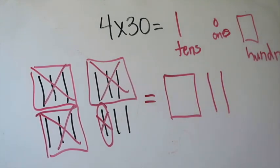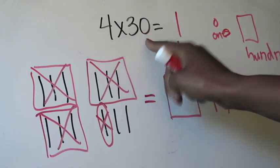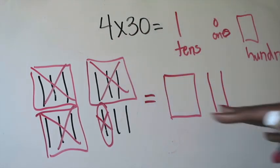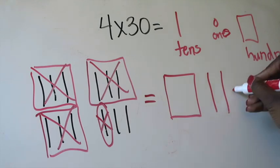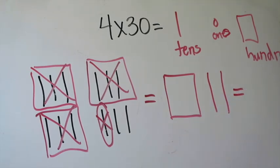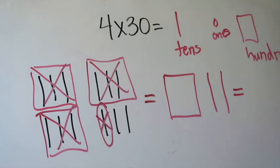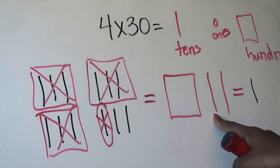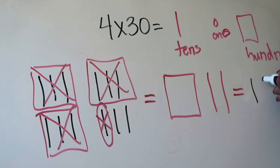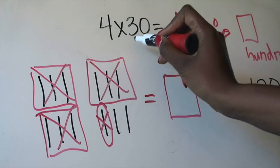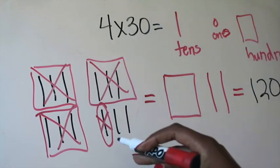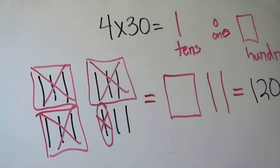That is a visual representation of what my product is for 4 times 30. So I need to translate that visual representation into an actual numeric product. I know that that square represents 100, and the two tens next to it represents 20. So the product of 4 times 30 using my quick picture is 120.